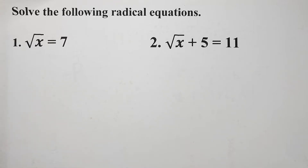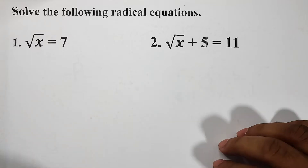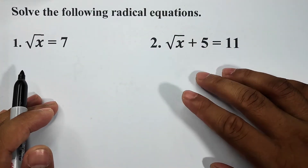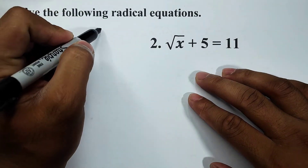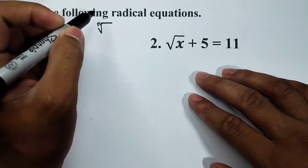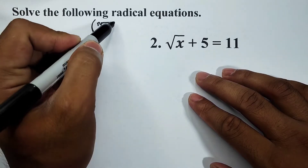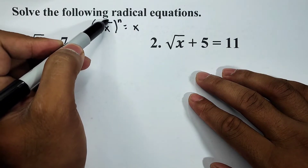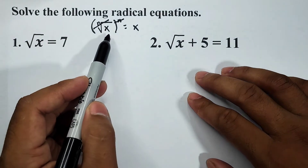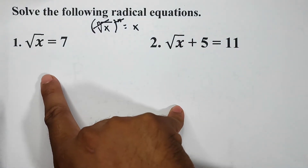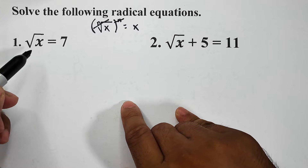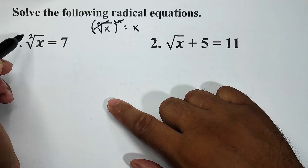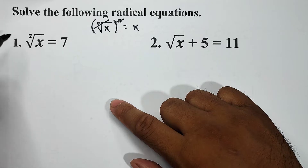Here in number one we are given: square root of x is equal to seven. Remember, for us to solve radicals we need to remember this rule: if we have the expression n-th root of x raised by n, the answer is x — we are canceling the radical sign and the exponent to get the variable x. The same law will be applied here.